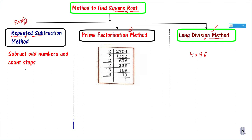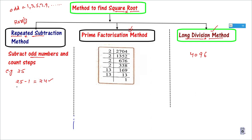Let me explain the limitation. In this method, we subtract odd numbers to find the Square Root. For example, if somebody asks: what is the Square Root of 25? I will subtract the first odd number. Odd numbers are: 1, 3, 5, 7, 9... If I subtract 1 (first odd number) from 25, I get 24. Next step: from 24, I subtract the next odd number 3, getting 21. After 3, the next odd number is 5, so from 21 I subtract 5 to get 16. After 5, the next number is 7, so 16 minus 7 equals 9.